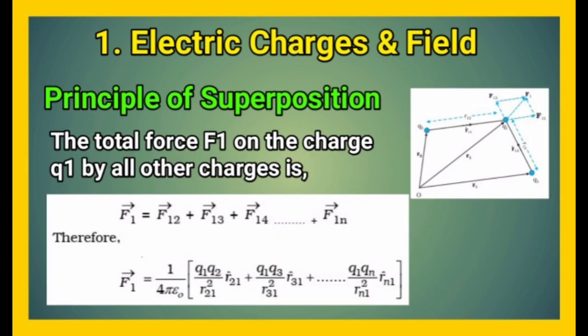the total force F1 on the charge Q1 by all other charges is given by F1 equals F12 plus F13 plus F14 plus up to F1n, or we can write it F1 equals 1 upon